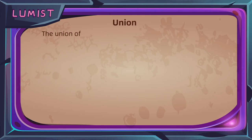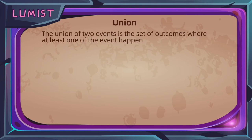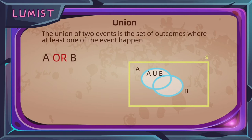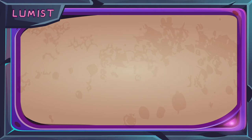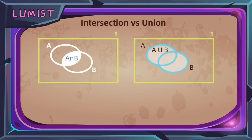Next, we have the union of two events. The union of two events is the set of outcomes where at least one of the events happens — generally referred to as A or B. On the Venn diagram, it refers to the entire goggle-shaped area where you are either inside the circle of A, inside the circle of B, or both. Notation-wise, this is represented with a U-shaped symbol, written as A union B. A clear distinction must be made: you can associate intersection with the keyword AND and union with the keyword OR. Also, the intersection symbol looks like the N in intersection, and the union symbol looks like the U in union.